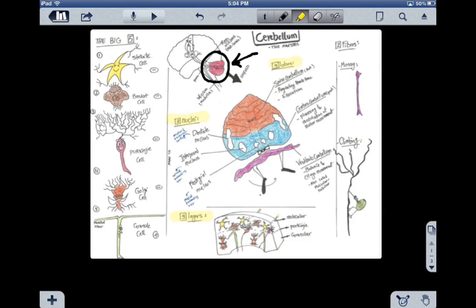The first lobe is the spinocerebellar lobe, which is also called anterior lobe, represented by the orange region of this figure. Its major function is regulating muscle tone and muscle execution.